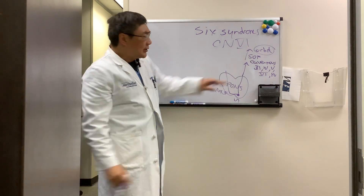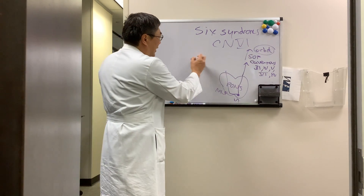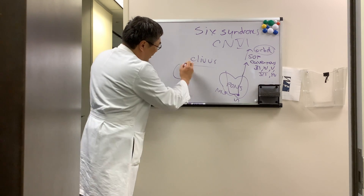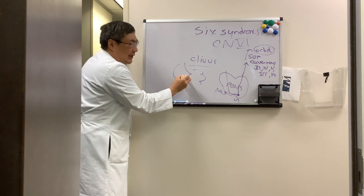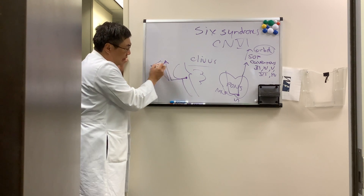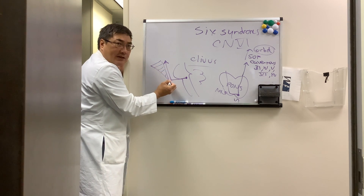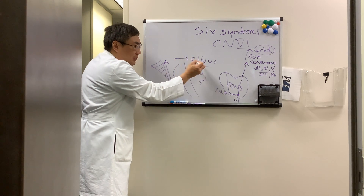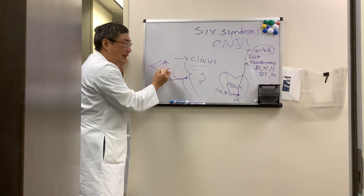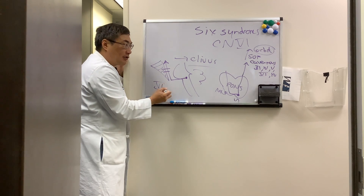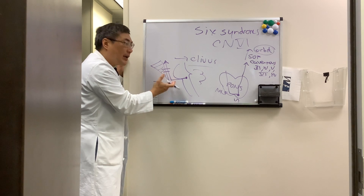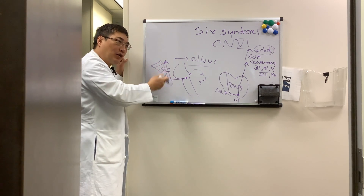Today we're just talking about the clivus. In the subarachnoid space, the sixth nerve leaves the caudal pons and has to travel rostrally up this bone — the clivus. It's a dangerous place for the sixth nerve because the only cranial nerve in the upper and mid clivus is the sixth. So a sixth nerve palsy could be the only presentation of a clival lesion, such as chordoma, chondrosarcoma, or meningioma.